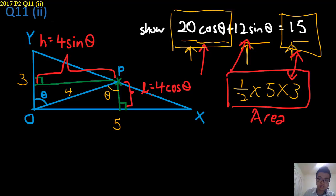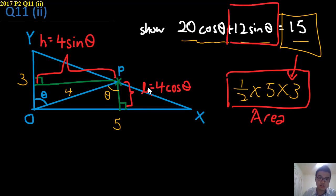Let's look at 20 cosine theta first. We can't use 4 and 3, because that's 12. But 4 and 5 will give us 20. And subsequently, 12 sine theta, you can get from 4 and 3.